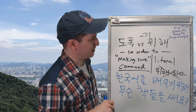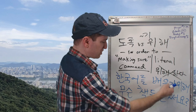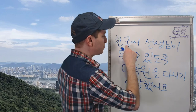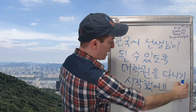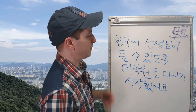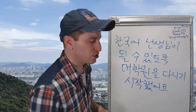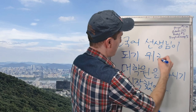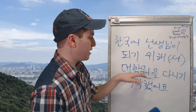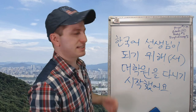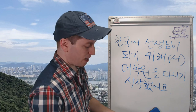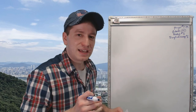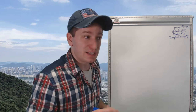한국어를 배우도록 — 'so that you learn Korean' — it's more like 'so much that you learn Korean, what books do you use?' It doesn't quite make sense in Korean. 한국어 선생님이 될 수 있도록 대학원을 다니기 시작했어요 — 'So that I can become a Korean teacher, I started attending graduate school.' You can also say 한국어 선생님이 되기 위해서 대학원을 다니기 시작했어요 — both are totally fine with the exact same meaning.